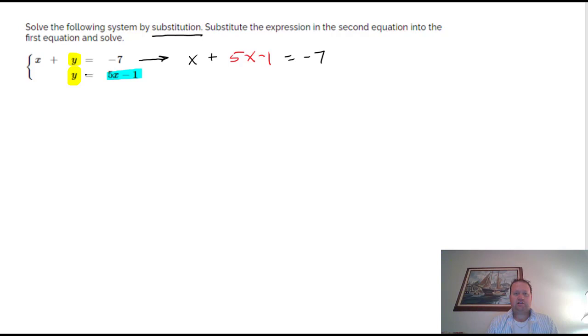And what that did was it took a two-variable equation and turned it now into a one-variable equation. We can collect our like terms: 6x minus 1 equals negative 7, and then it's just a two-step equation after that.